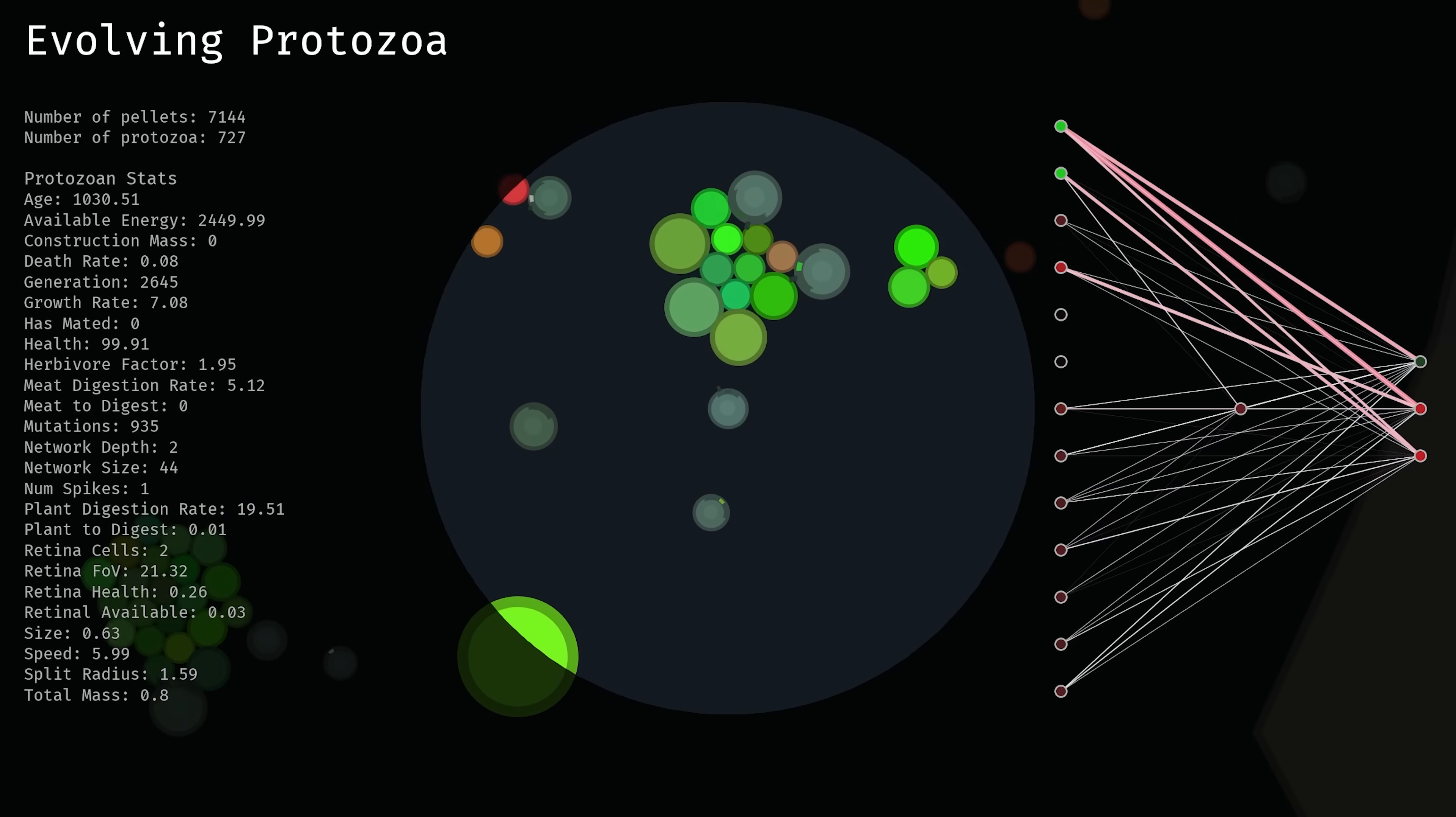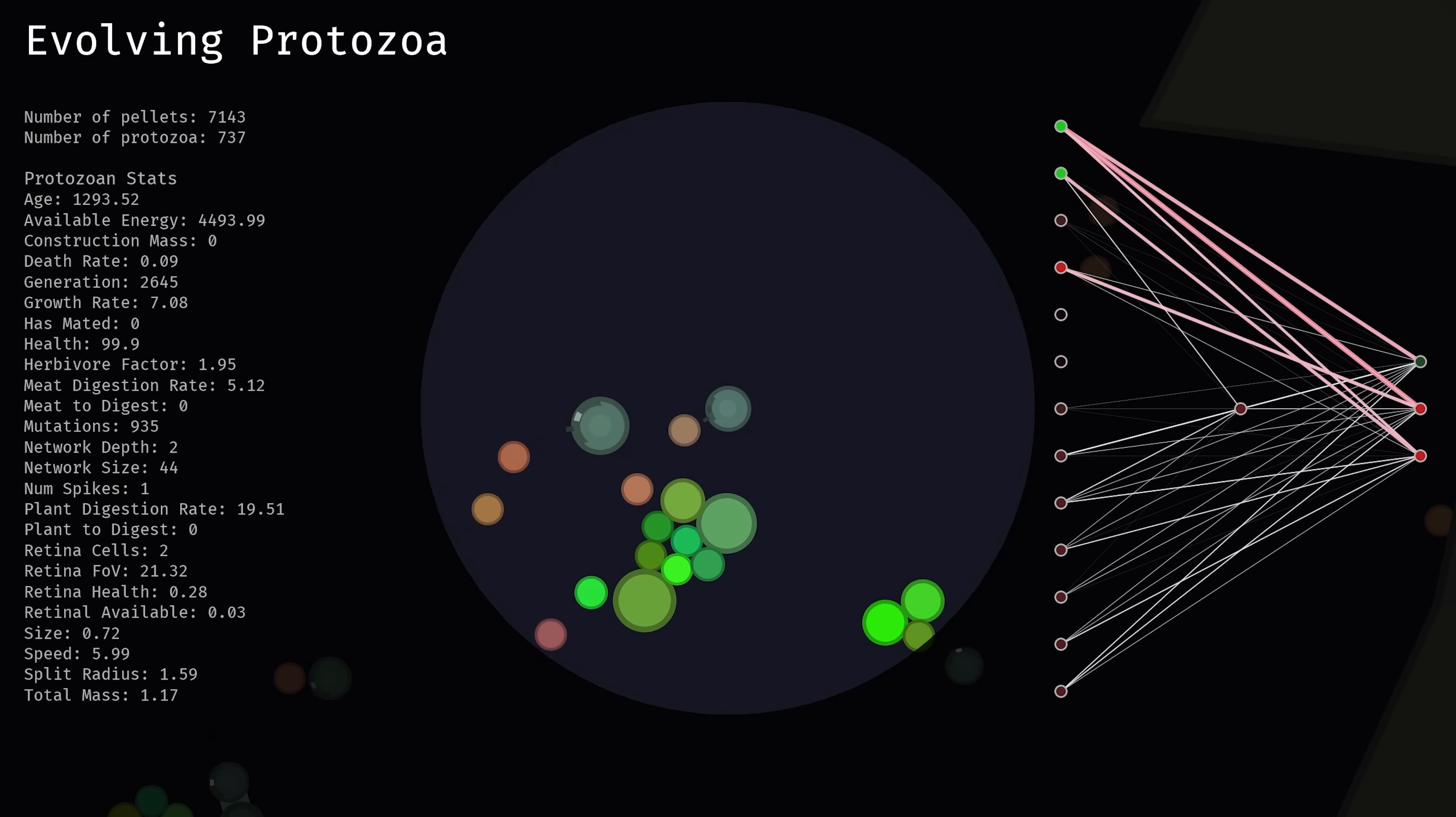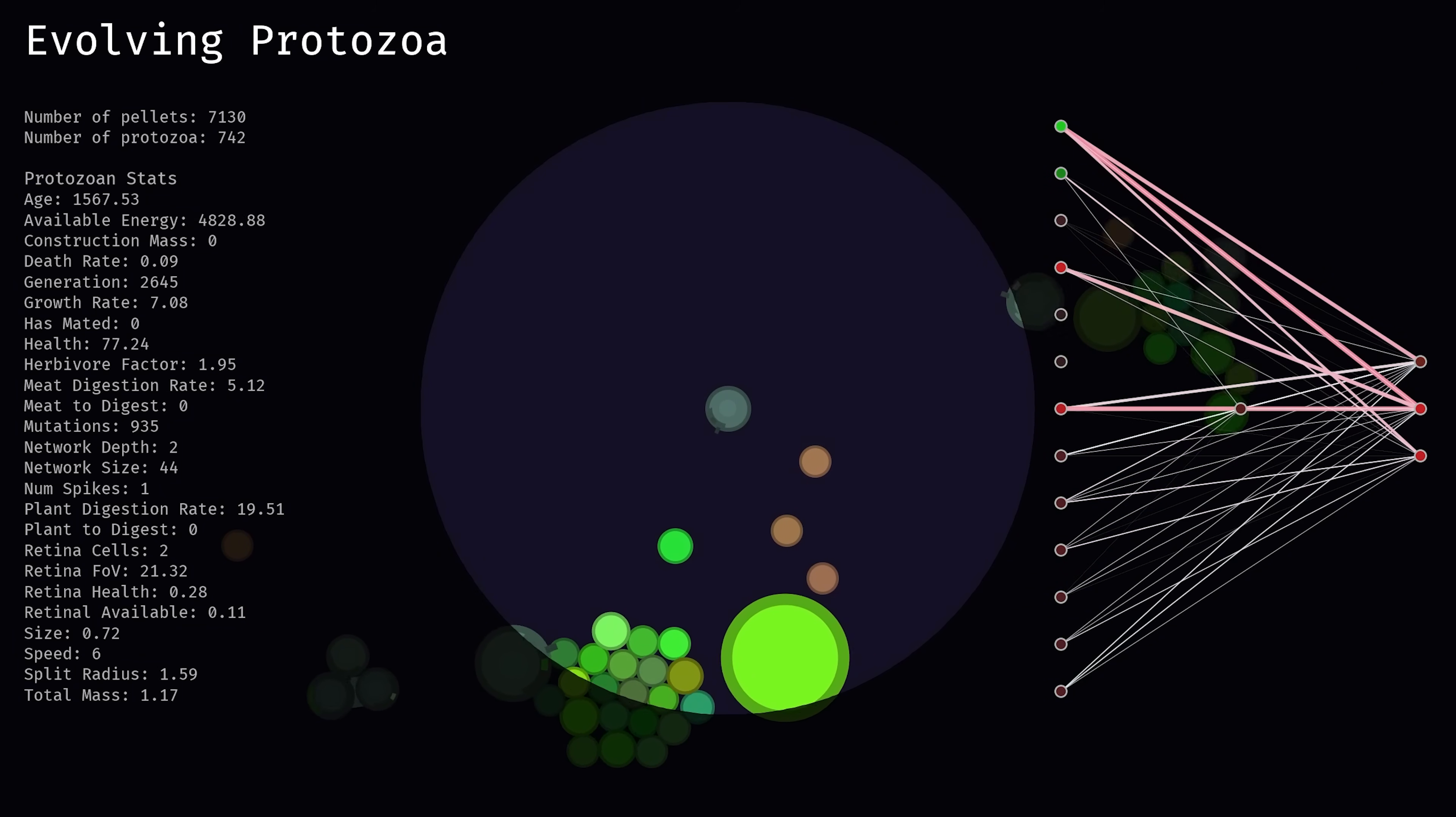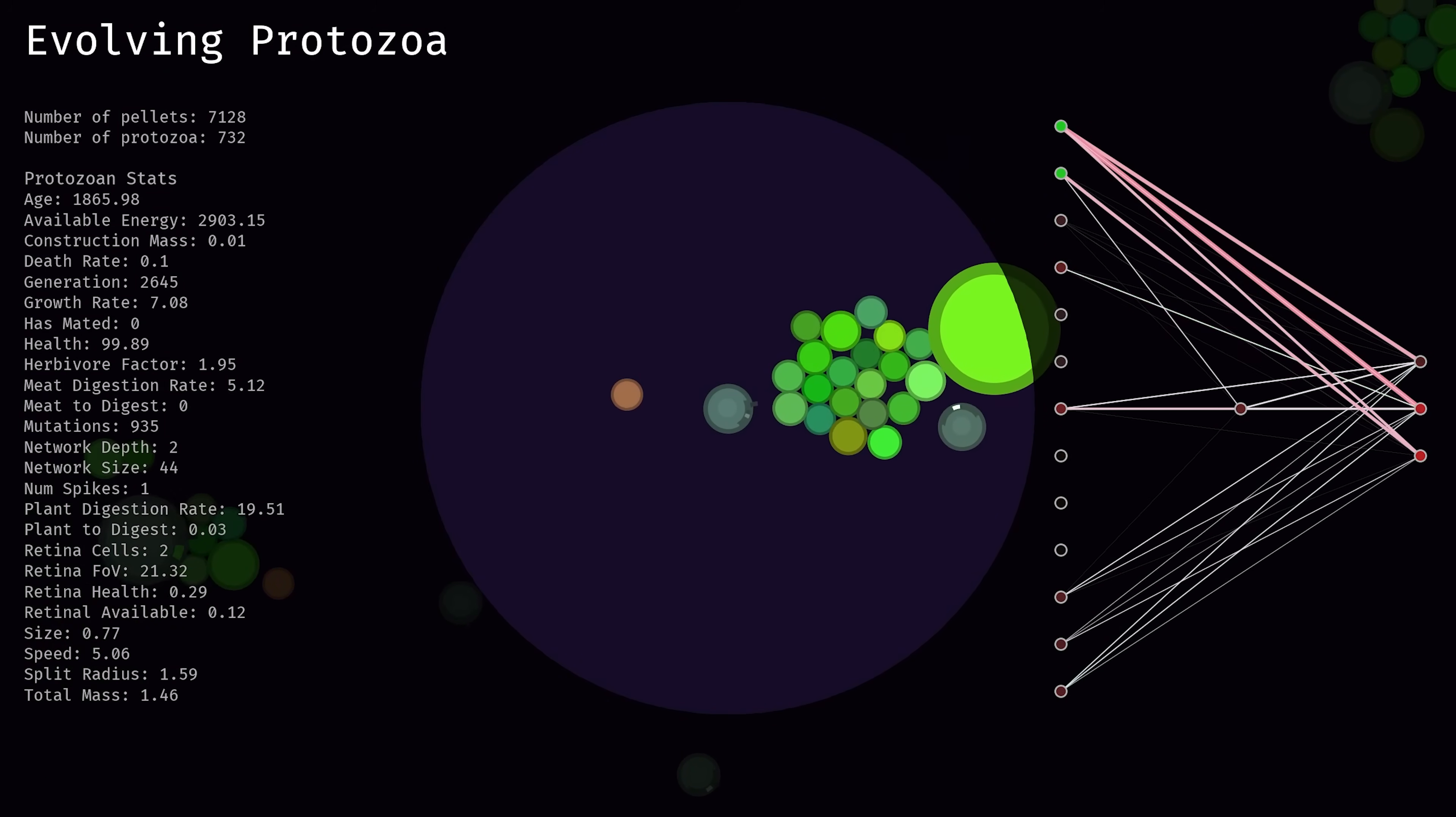Before going into too many details of how everything works, I think it's instructive to just start by watching this protozoan as it develops. In the UI we're tracking it as it moves around its environment, controlling its speed and angle of turning via a neural network controller that it's evolved. We can see this network visualized on the right hand side of the screen with its neurons and synapses dancing in flux with the activations of its various input sensors.